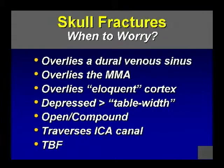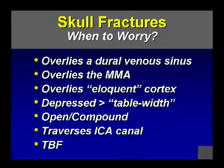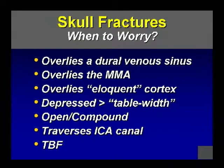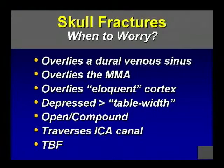When there's a skull fracture, I'm particularly concerned when it overlies a dural sinus — predisposing to dural sinus thrombosis, venous hypertension, and hemorrhagic venous infarcts. I'm concerned when it overlies the middle meningeal artery because of epidural hematoma at the temporal squamosa. Overlying eloquent cortex — sensory and motor — is concerning. Depression of more than one table width is concerning to neurosurgeons; they'll uplift that. If it's open or compound — laceration, radiopaque foreign body, air in soft tissues — there's infection risk. If it traverses the skull base or the internal carotid artery canal, worry about pseudoaneurysm, vascular dissection. Temporal bone fractures have their own set of problems.